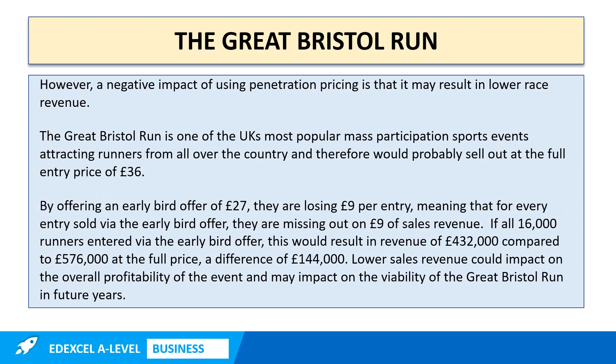In a 10 mark question we have to produce a balanced response, so here we provide balance by looking at a negative impact of using penetration pricing — that it may result in lower race revenue. The Great Bristol Run is one of the UK's most popular mass participation sports events attracting runners from all over the country, and would probably sell out at the full entry price of £36. By offering an early bird offer of £27, they are losing £9 per entry. If all 16,000 runners entered via the early bird offer, this would result in revenue of £432,000 compared to £576,000 at the full price — a difference of £144,000. Lower sales revenue could impact on the overall profitability of the event and may impact on the viability of the Great Bristol Run in future years.